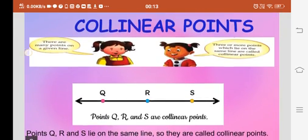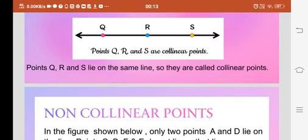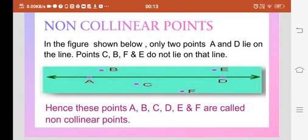If three points are lying in a single line, they are called collinear points. Here you can see points Q, R, and S are lying on the same line, so they are called collinear points.